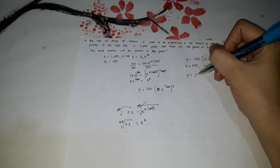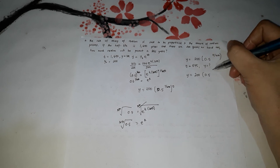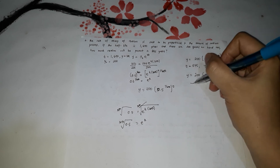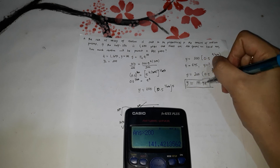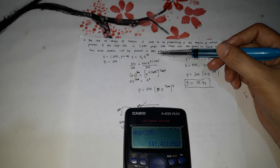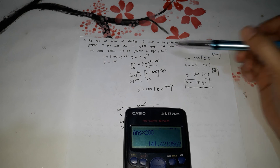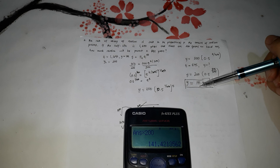Substituting t = 845: y = 200 · (0.5)^(845/1690) = 200 · (0.5)^(1/2). Calculating: 0.5^(0.5) × 200 = 141.42. So after 845 years, the amount of radium would become approximately 141.42 grams, down from 200 grams. That's how we solve problems involving exponential growth and decay using anti-differentiation.